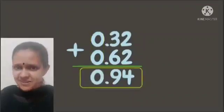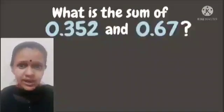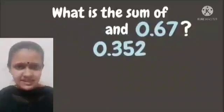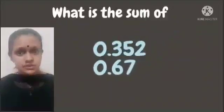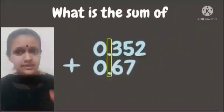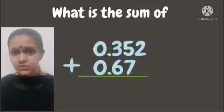Let's have another example. What is the sum of 0.352 and 0.67? First, align the decimal numbers. What will be our next step? Yes, make sure that the decimal point and the digits with similar place values are aligned.